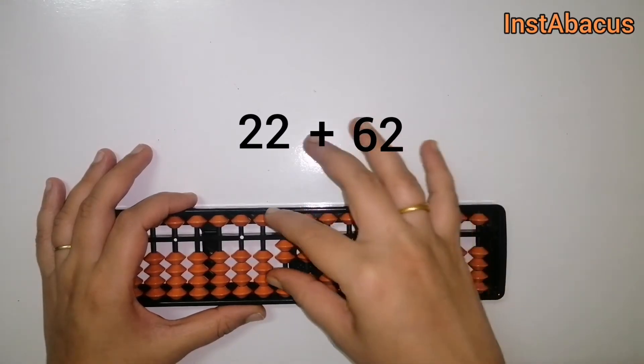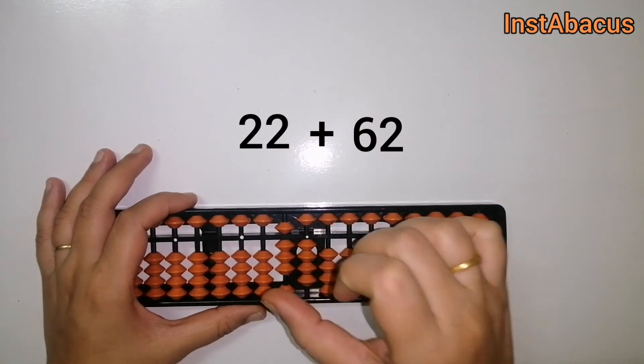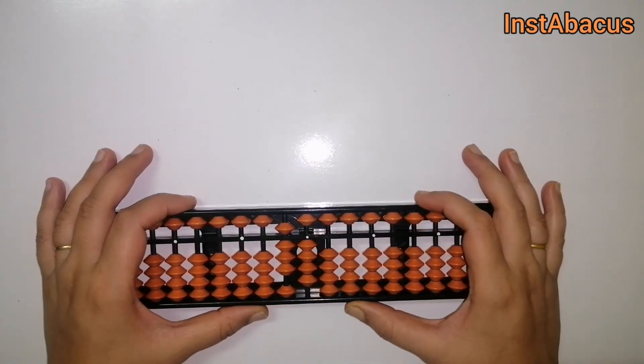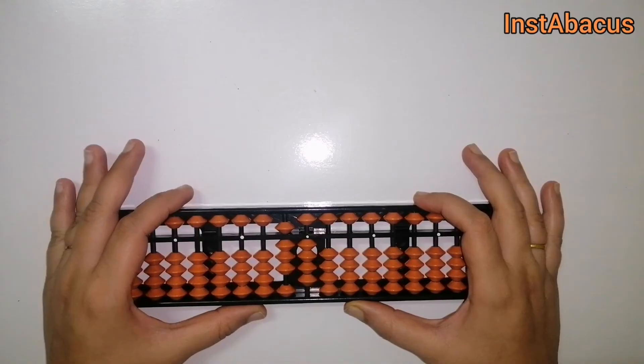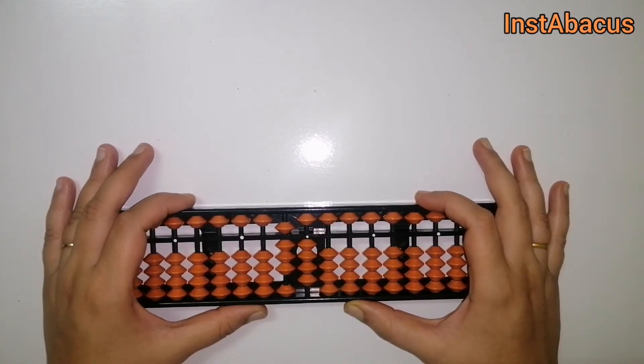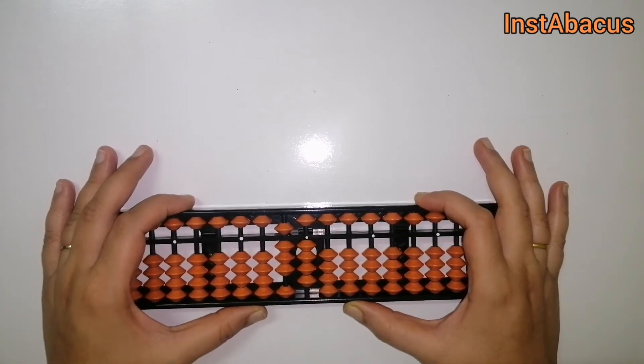Okay, 6 here and 2 here. Are you getting my point? 22 plus 62, that is 84. That's correct.